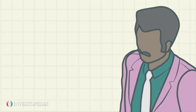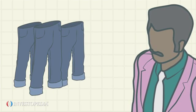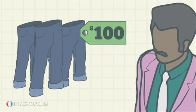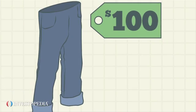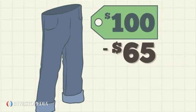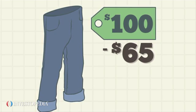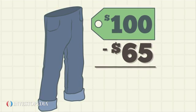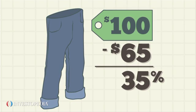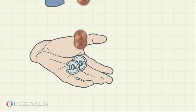A business owner, Ida, might use contribution margin figures to decide which product's costs he should reduce or which price he should increase. For example, if a pair of jeans sells for $100 and its variable costs are $65, its contribution margin is $35 or 35%. This means that for each dollar of sales, profit increases by $0.35.